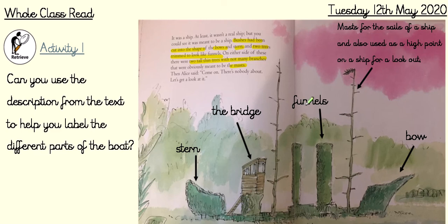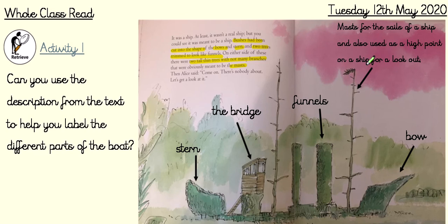We've got the funnels — two trees trimmed to look like funnels, they're these ones here. Then on either side of those funnels, we've got two tall thin trees with not many branches — this one and this one here — that's the masts. Masts are for the sails of a ship and can also be used as a high point on a ship for people to climb up and look out from.